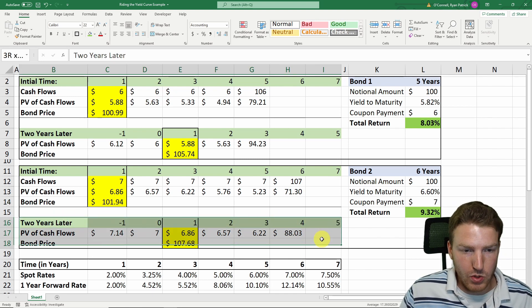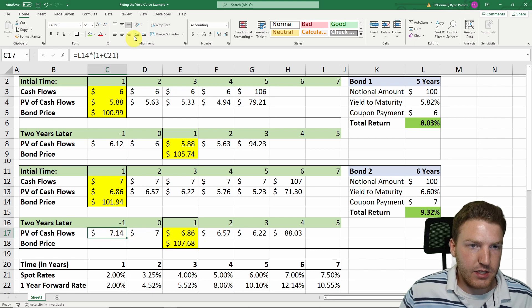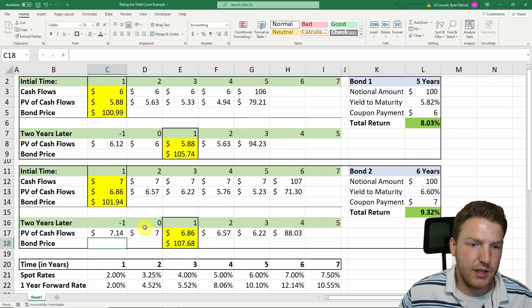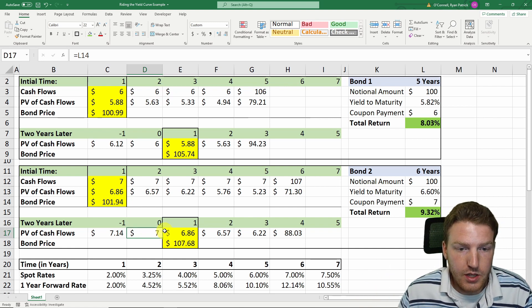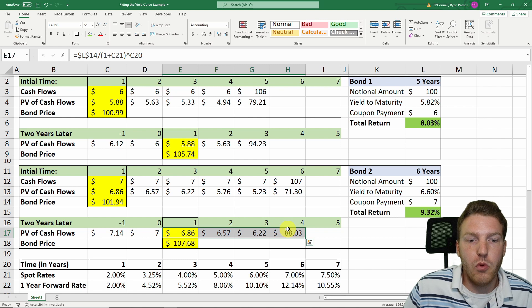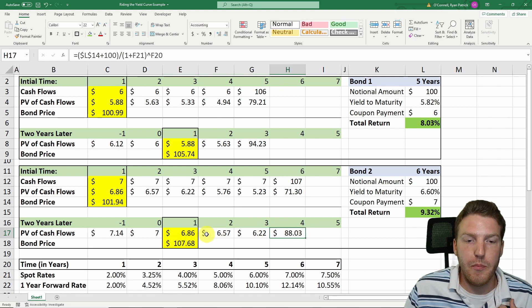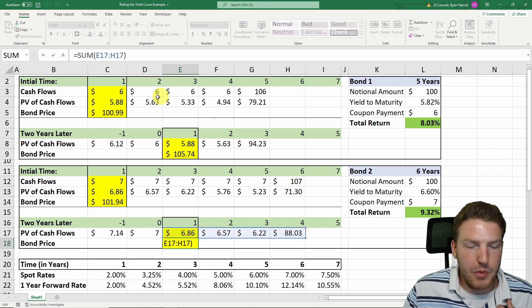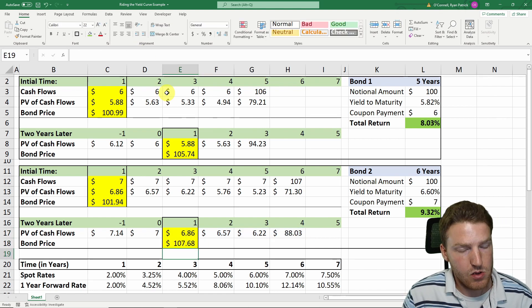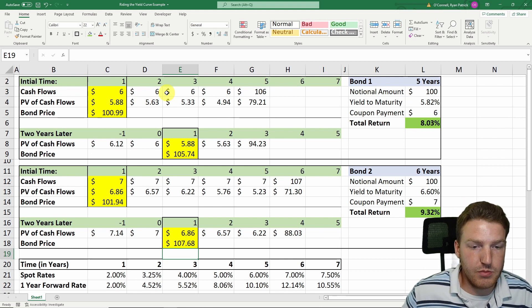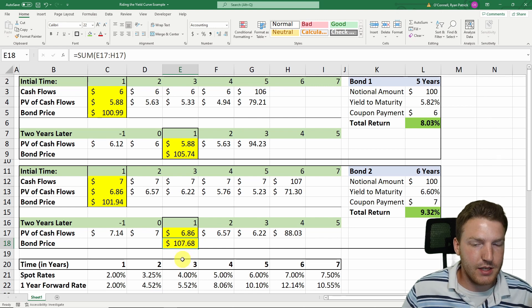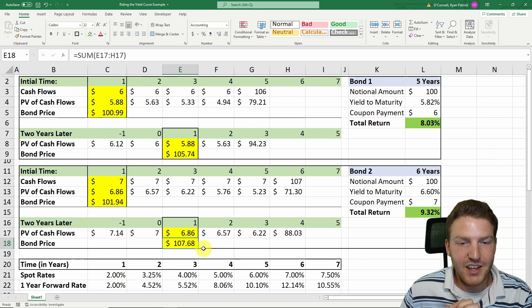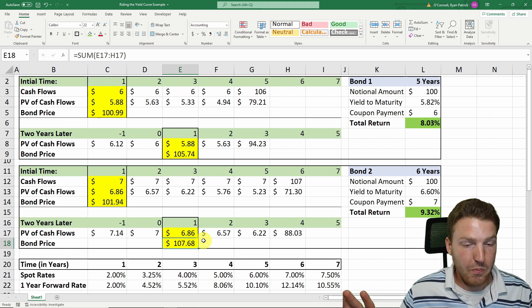But then two years later, what's the situation? We got that $7, we can reinvest it at 2%. Then today, which is exactly two years later, we got $7. And then we have four more cash flows we're going to receive in the future that we can discount backwards. We take the present value of each of those, and we sum it up, and we realize that today, which is two years after our initial investment, we could sell this bond for $107.68 if the yield curve does not move at all over that two years.